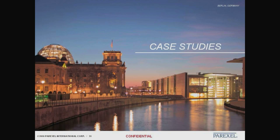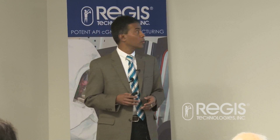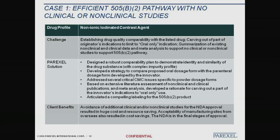Let me talk about three case studies we were involved in, covering different situations that 505(b)(2) can support. The first is a non-ionic iodinated contrast agent. The challenge was establishing drug quality comparability with the listed drug, carving out part of the originator's indications to limit to oral-only use, summarizing existing non-clinical and clinical data, and doing a meta-analysis to support the 505(b)(2) pathway. We designed a robust comparability plan to demonstrate identity and similarity of the drug substance.